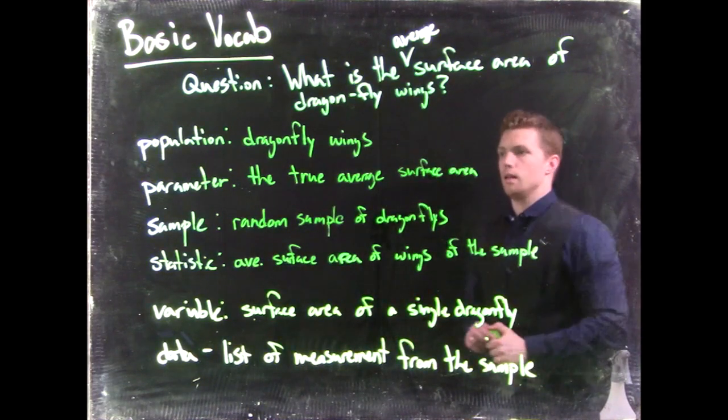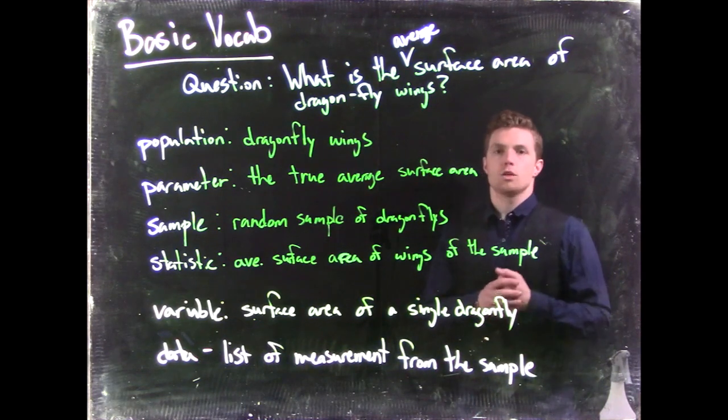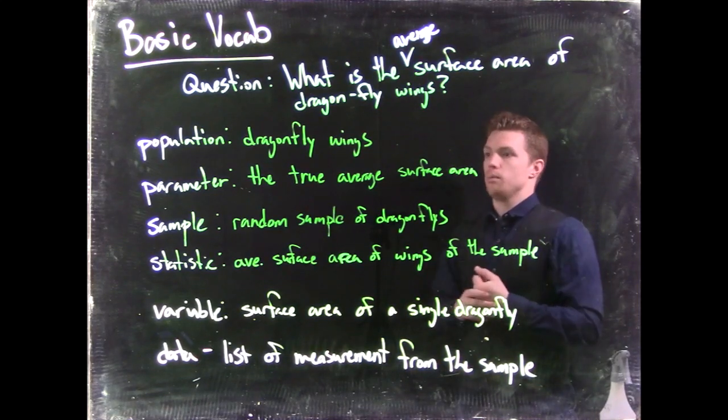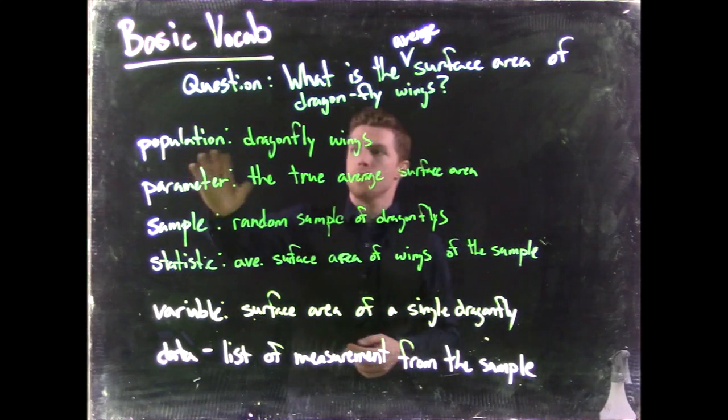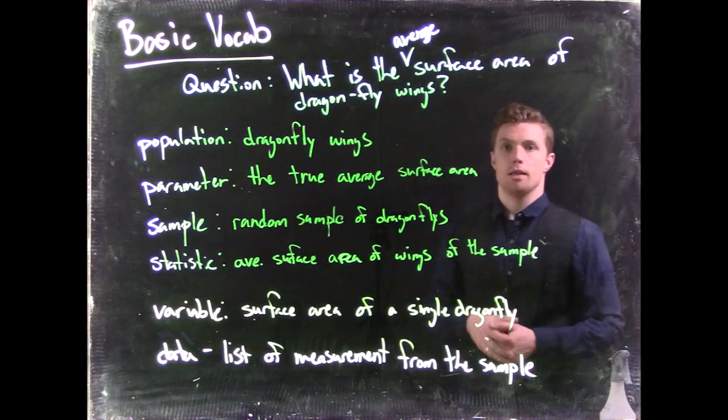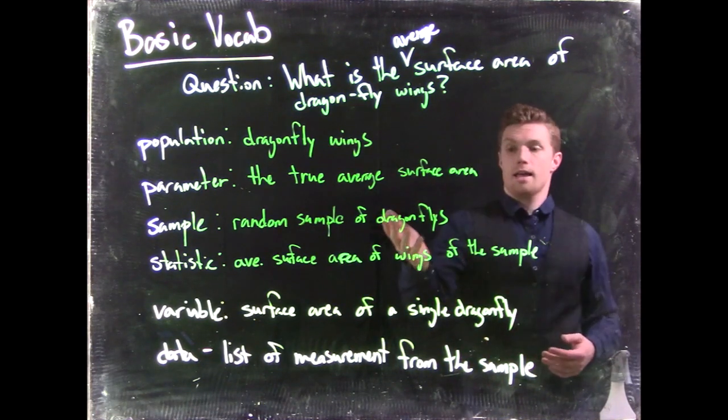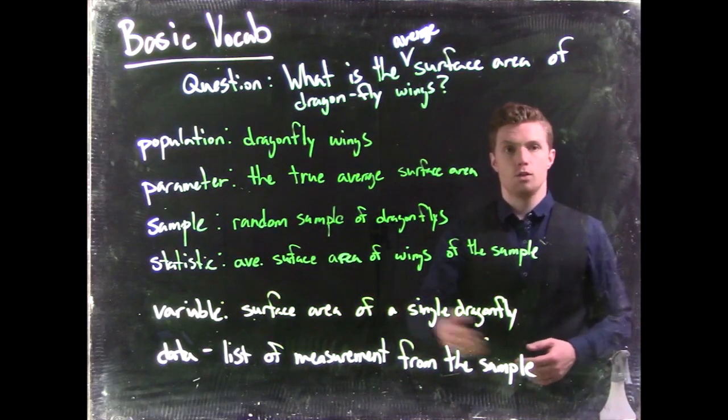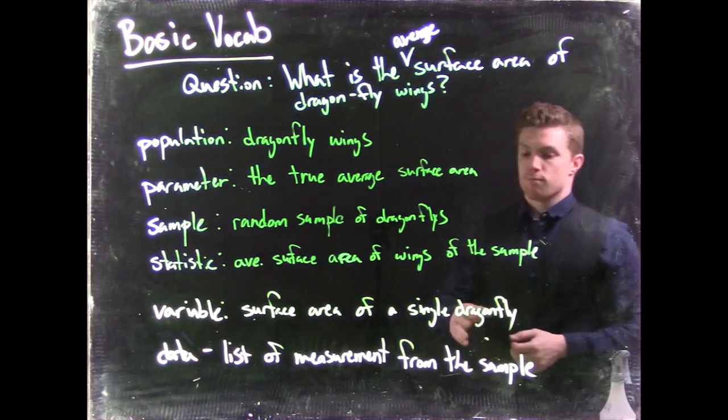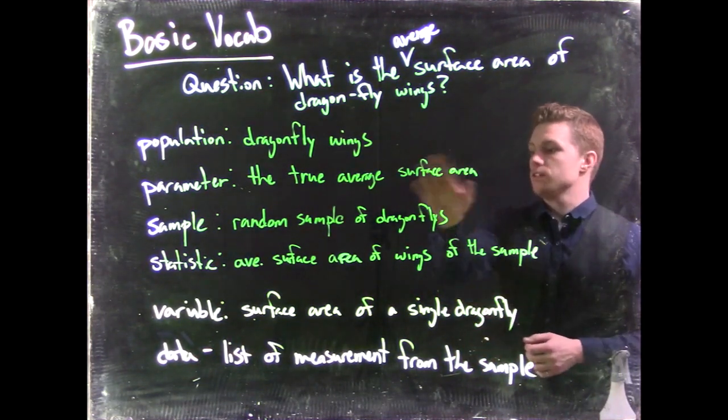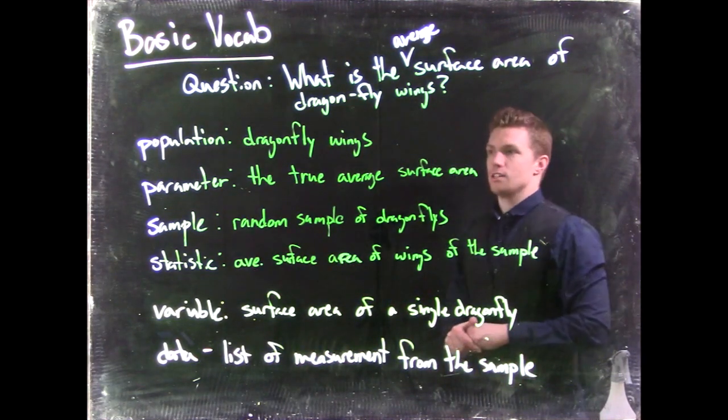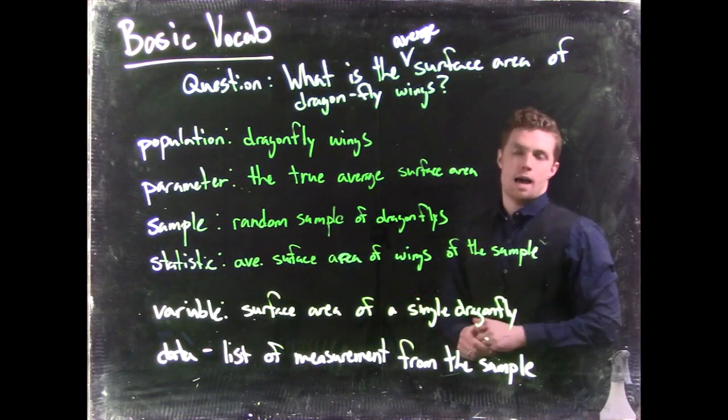So knowing these vocabulary terms will help us identify what do we have and what are we after, and it'll help us understand the relationships. Ultimately, we're trying to make statements about the population. It's hard to actually measure an entire population, so what we do is grab a sample and take measurements of the individual members. Our variable would be the surface area. We measure it of the individual members of the sample, compile it into the data, and then from that data we can take an average quite easily, find our statistics so that we can have some sense of what is happening with the population.